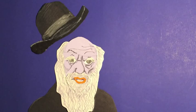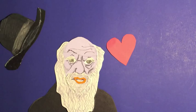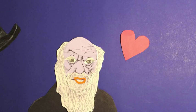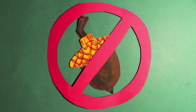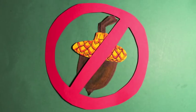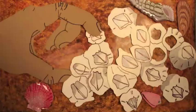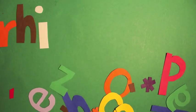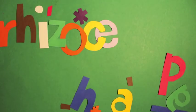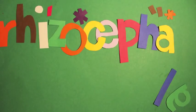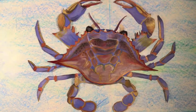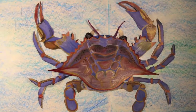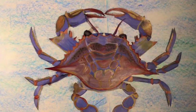However, not all barnacles look like these acorn barnacles that we encounter along the rocky intertidal. In fact, acorn barnacles are related to parasites called rhizocephala, a type of barnacle that invades decapods such as crabs and lobsters.